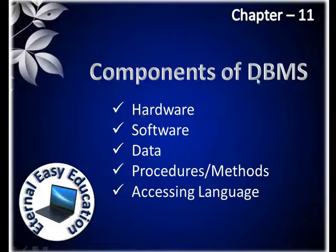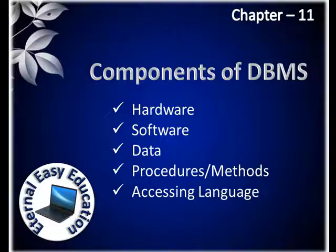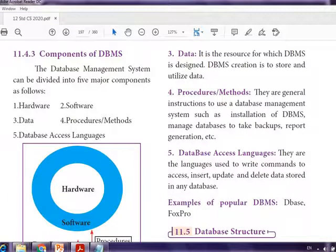There are five components in a DBMS: hardware, software, data, procedures or methods, and accessing language. The DBMS can be divided into these major components.